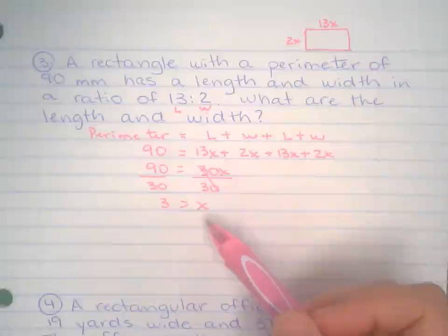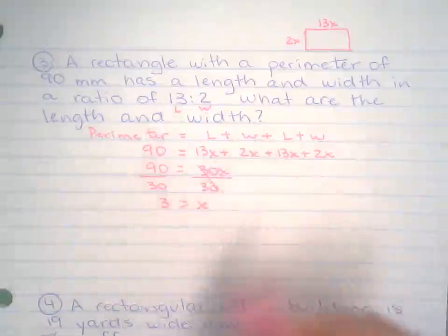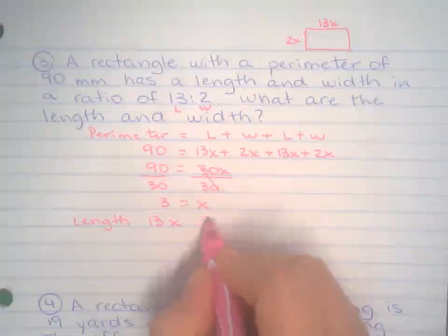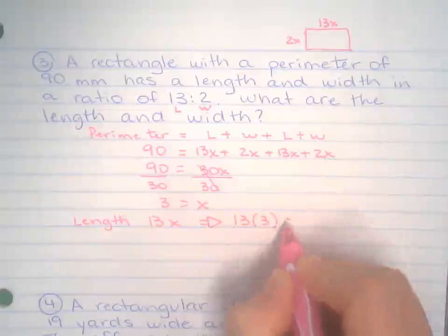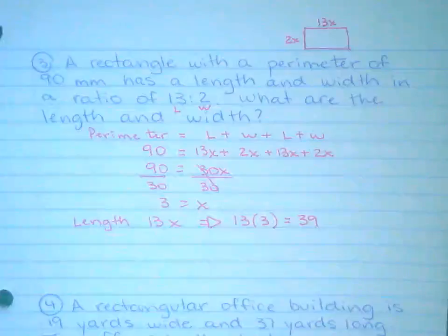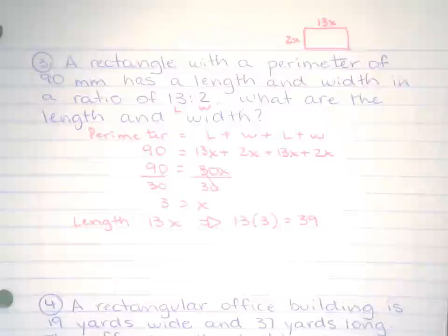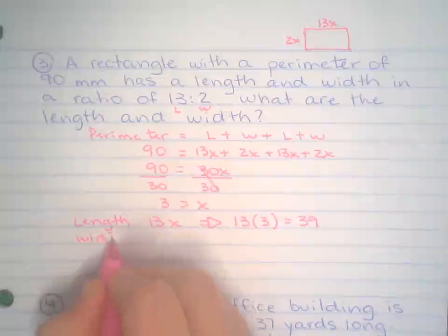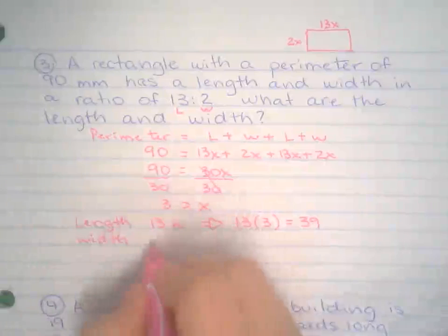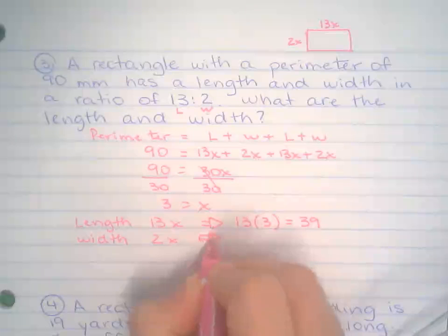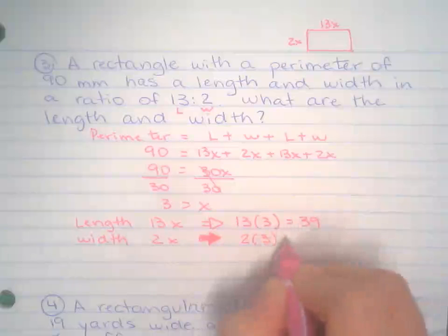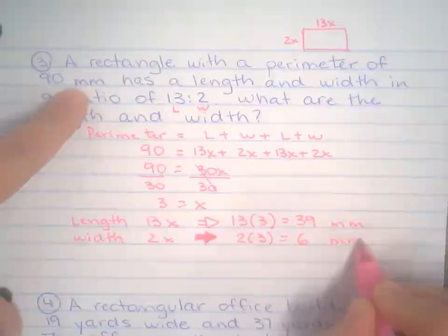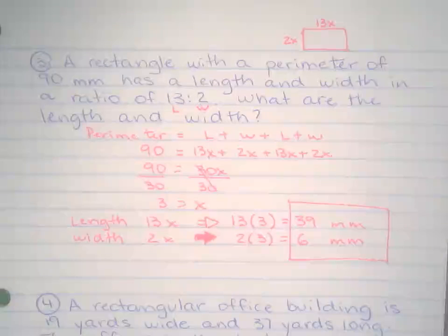The question is not asking about x. The question is asking, what are the length and the width? So, the length? All I know is it's 13x. Now that I know that x is 3, I'm going to plug in 3 for x. So, 13 times 3. That will give me 39 millimeters. And the width is 2x. I know x is 3. So, I substitute that and I get 6 millimeters. And since we're talking about millimeters, it doesn't hurt to add the units right there.